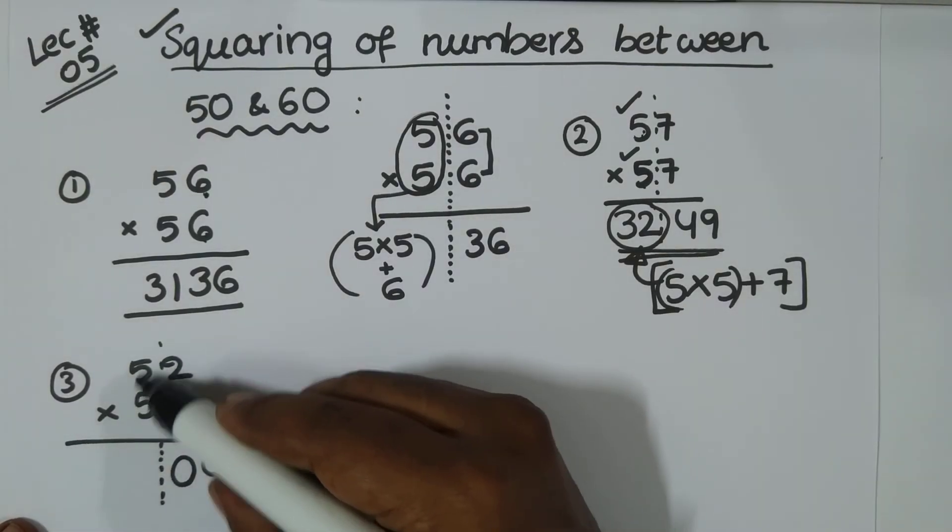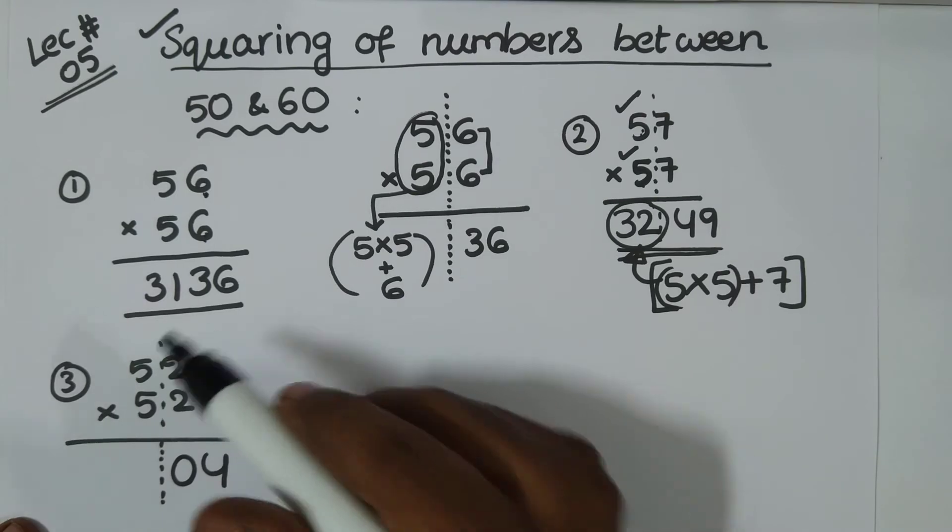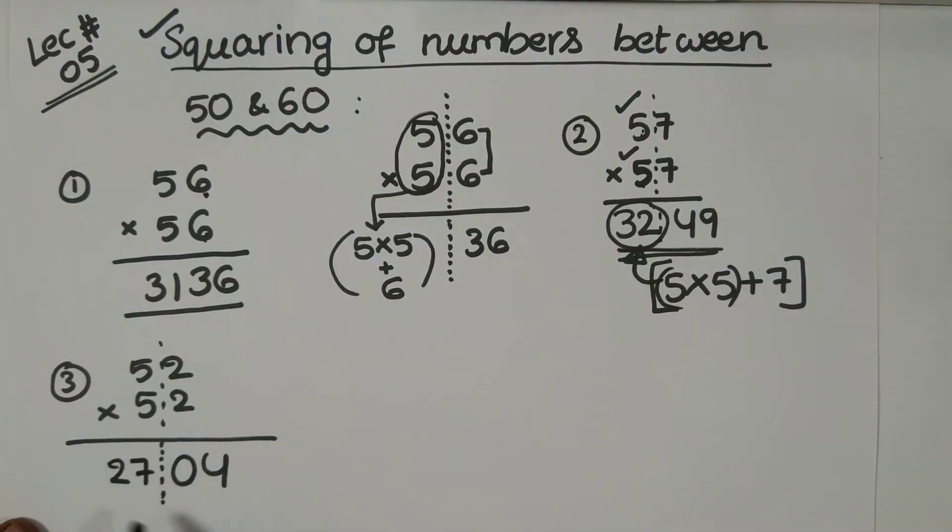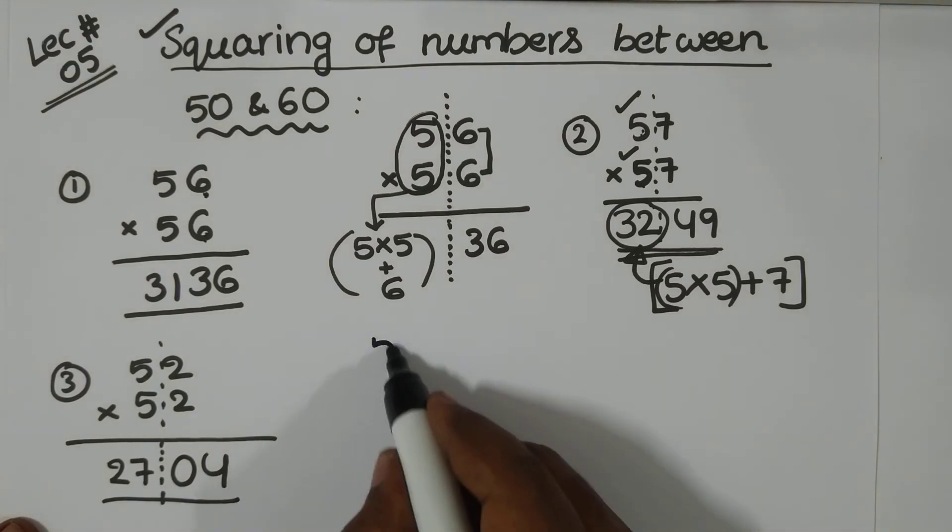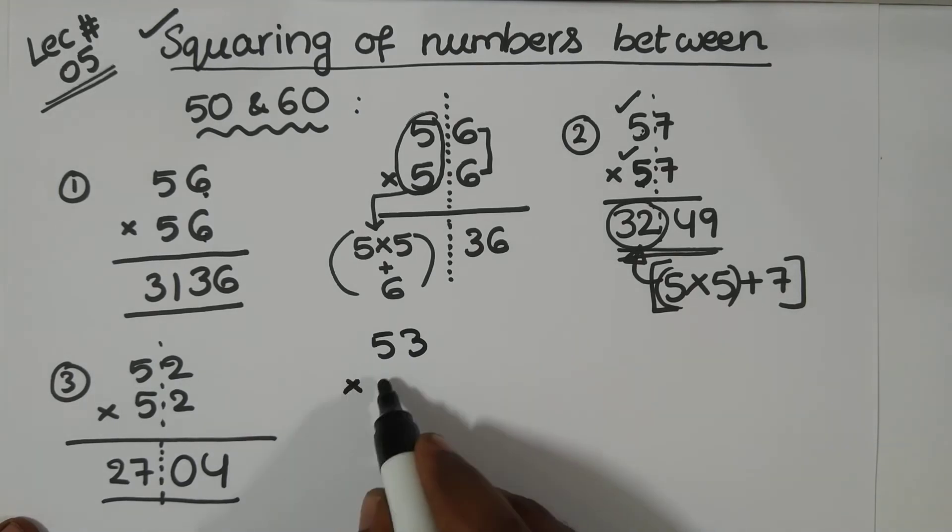This is what? 5, 5 is 25 plus 2. So, 25 plus 2 is 27. Okay? So, like this you can keep on doing things. I can multiply 53 multiplied by 53.